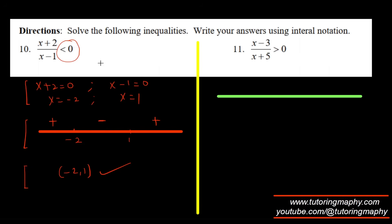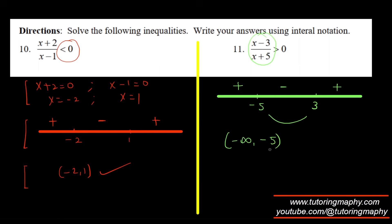For the next inequality, the zeros are negative five and three. Testing x equals 100 makes it positive; x equals zero makes it negative; x equals negative 100 makes both factors negative, so positive. We want greater than zero, so the answer is negative infinity to negative five union three to infinity.